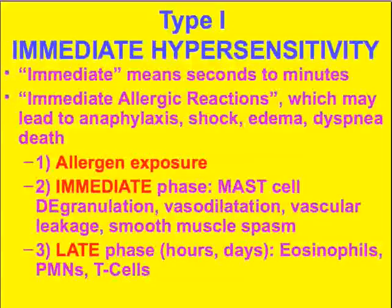In type one, 'immediate' means seconds to minutes. These are items often described as acute allergy, sometimes fatal — anaphylaxis, shock, edema, dyspnea. In all types of type one immediate hypersensitivity there is an allergen exposure followed by an immediate reaction, often consisting of mast cell degranulation, vasodilation, vascular leakage, and smooth muscle spasm.